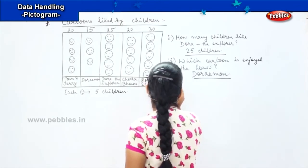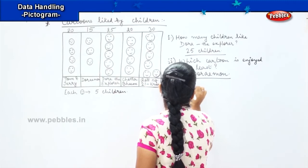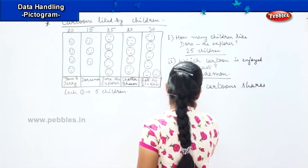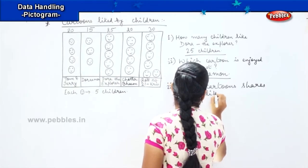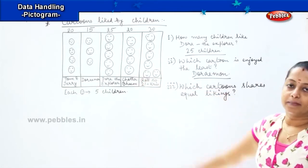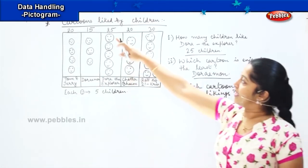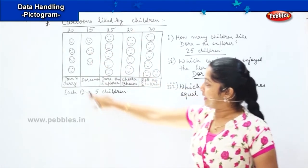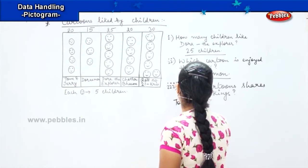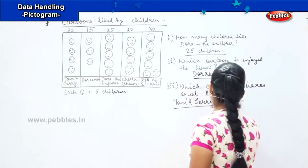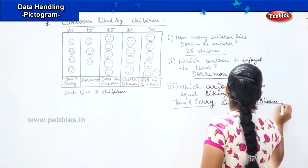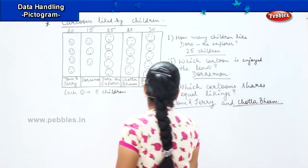The next question is: which cartoon shares equal liking? It means which cartoons are liked equally — is there any number repeated twice? Yes, 20 is repeated twice. The two cartoons with 20 kids each are Tom and Jerry and Chhota Bheem. So my answer is Tom and Jerry and Chhota Bheem.